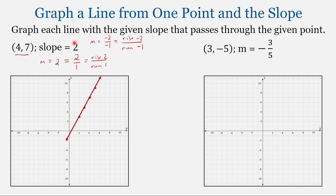Doing a quick check: I have a positive slope, and my line goes up from left to right. For this last problem, we have the point 3, negative 5 and a slope of negative 3 fifths. We'll start by graphing that point — move to 3 on the x-axis, and with a y-coordinate of negative 5, go down 5. This is our starting point.